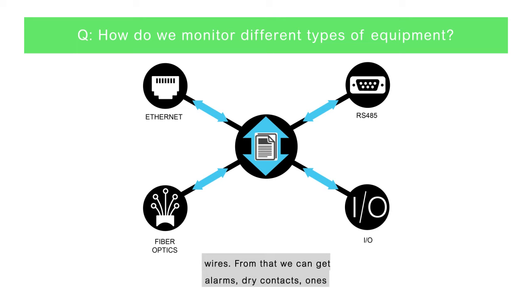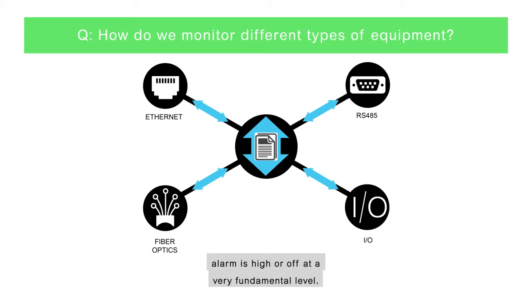From that we can get alarms, dry contacts, ones and zeros, ons and offs, opens and closes — and the alarm is high or off at a very fundamental level.